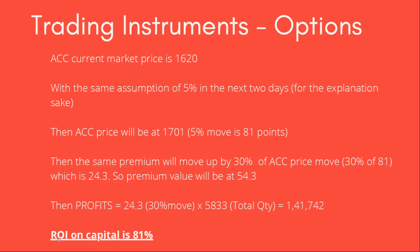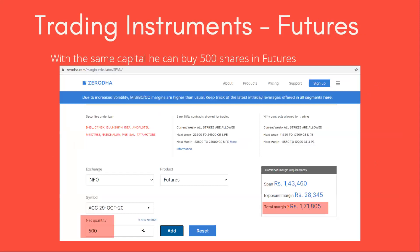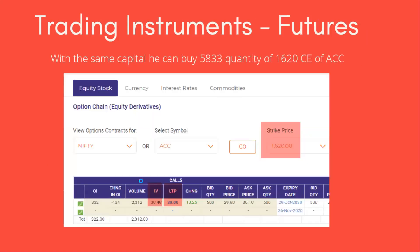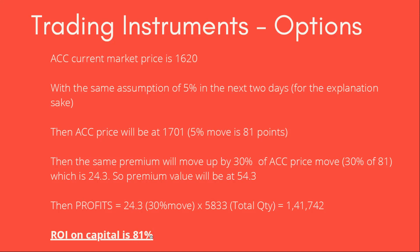In this case, the return on investment on our capital is 81%. So in the first scenario, with equity we had around 5% ROI. With futures, we had around 53% ROI. Whereas with options, we have 81% ROI. This is how these three different trading instruments work. I will repeat once again — both futures and options carry a high degree of risk. Your entire capital can be wiped out if the trade goes against your direction. If you are a beginner, I request you to avoid both futures and options. The idea of this module is to explain how these instruments offer different degrees of risk and reward.